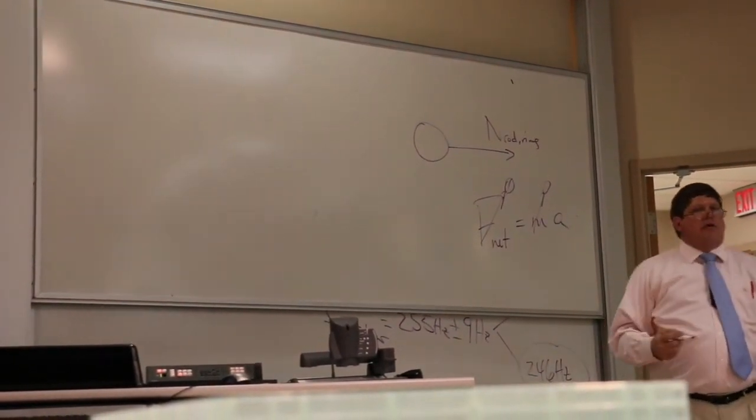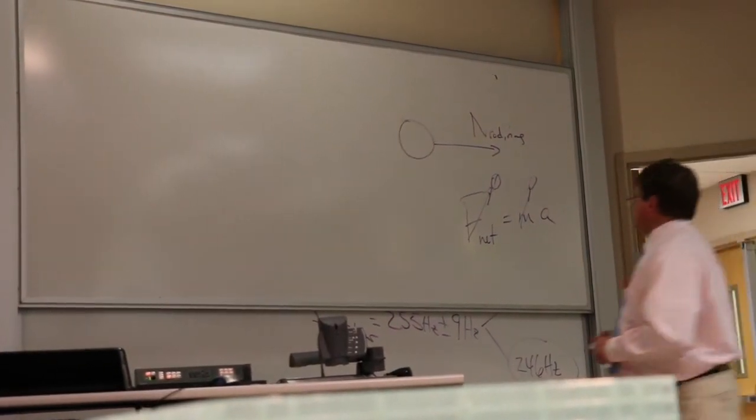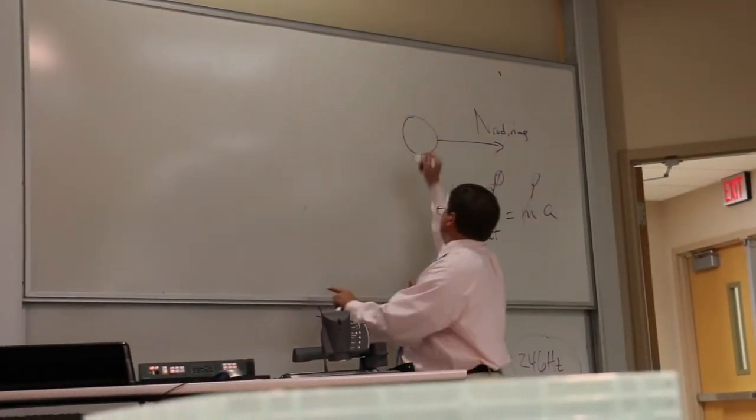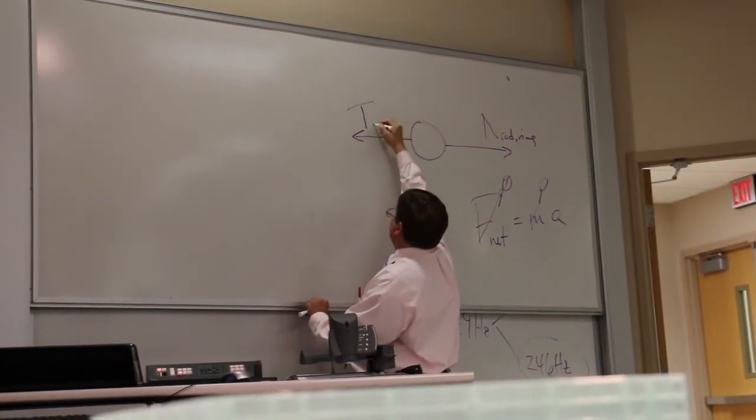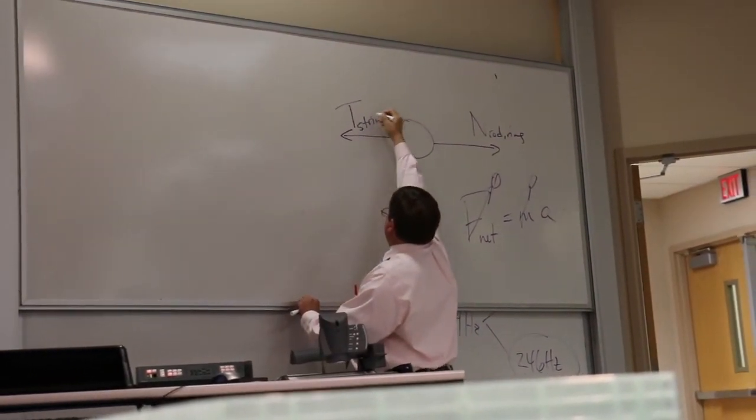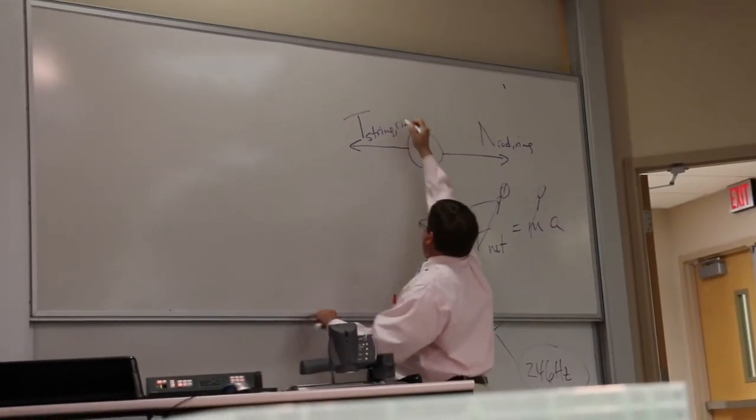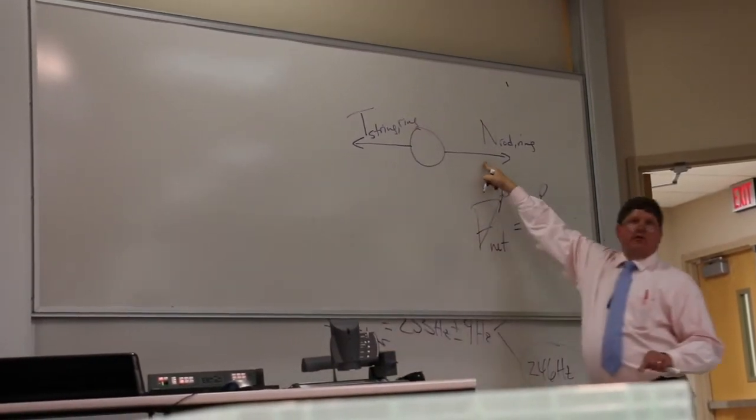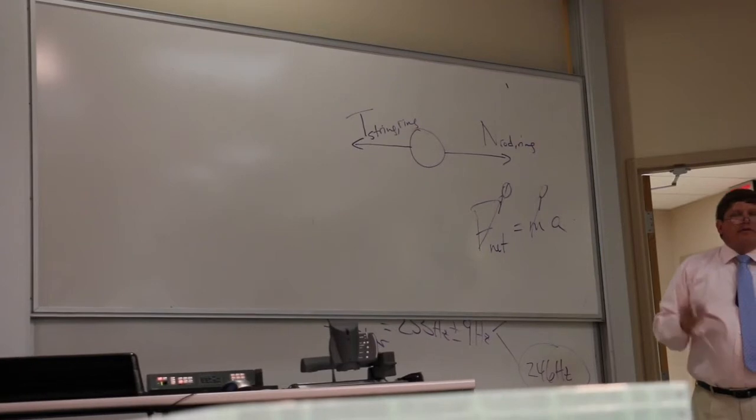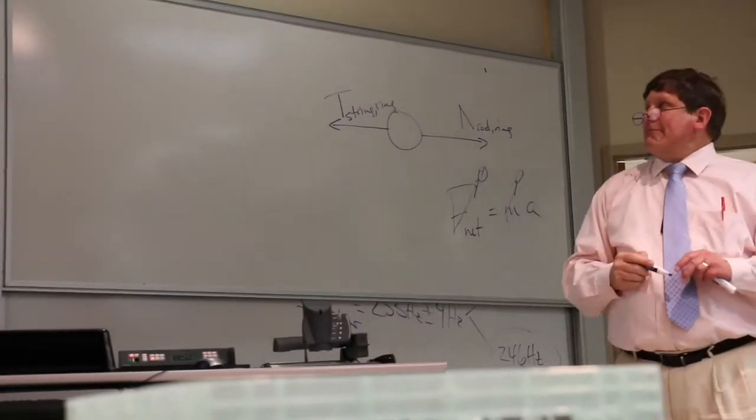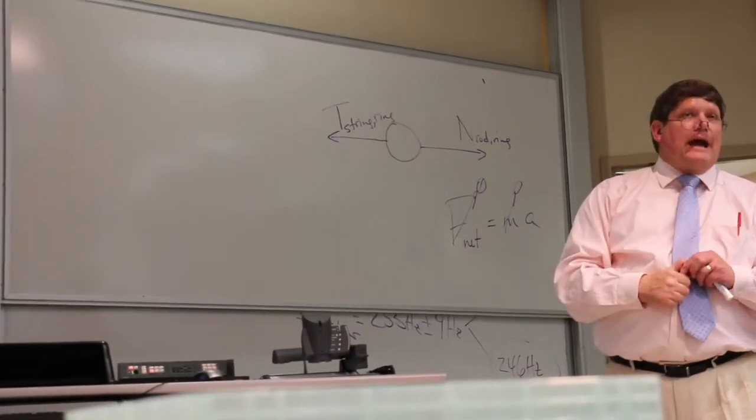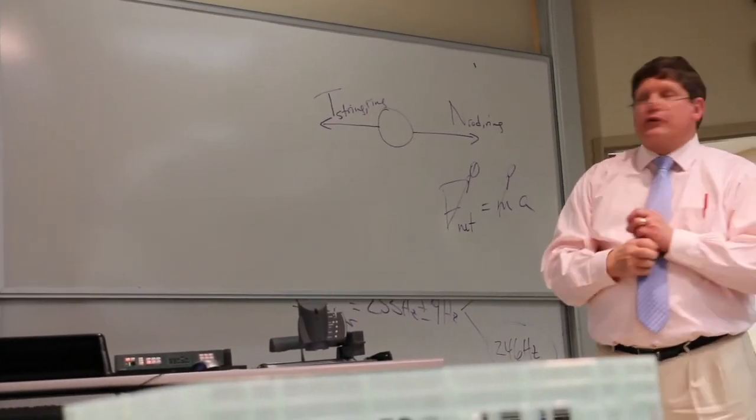Well, the only other force on that ring is the string pulling on it. In order to make that net force zero, the tension by the string on the ring has to point opposite the normal force. The normal force, by definition, has to be perpendicular to the rod. And that means that your string has to always come in perpendicular to the rod.